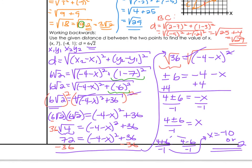What this means is on your coordinate system, that x for the first coordinate could be at negative 10 or positive 2, and you would have the distance of 6 square root 2 between those two points. Flip it over, we're going to talk about midpoint, and midpoint is a much easier formula to work with.